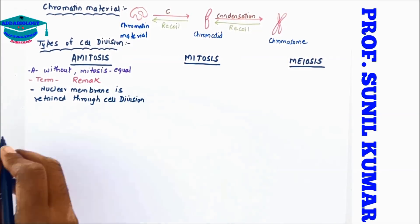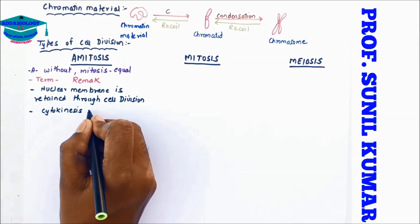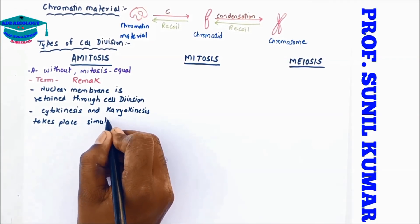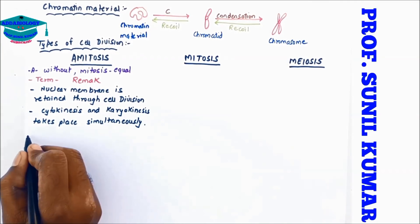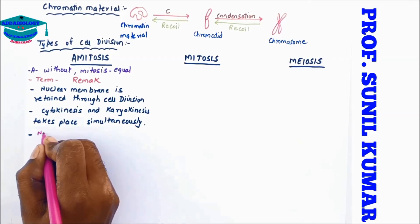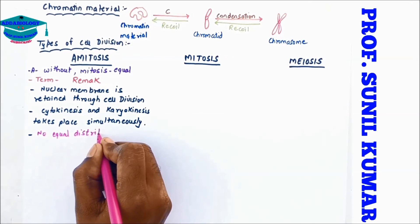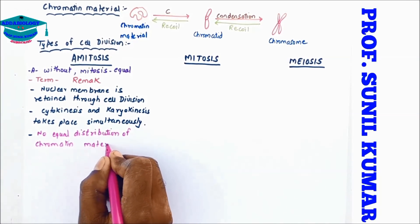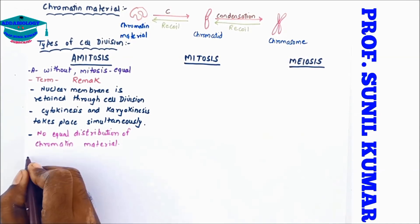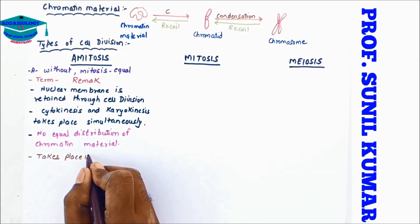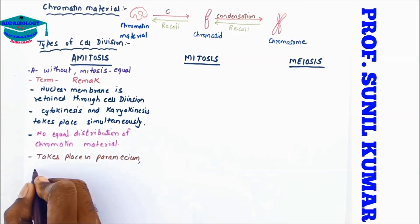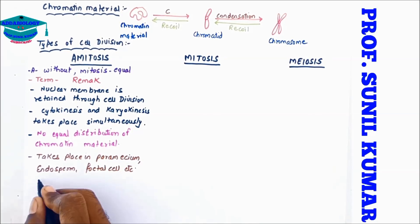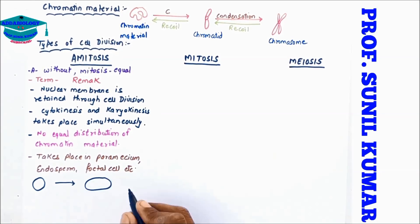In amitosis, the nuclear membrane is retained throughout the cell division. Cytokinesis and karyokinesis take place simultaneously. There is no equal distribution of the chromatin material or the genetic material.